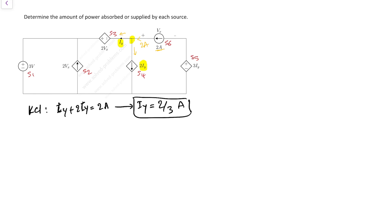That was kind of easy to find. Now we need to find Vx. Vx is the voltage across this current source. As we discussed before, the voltage across a current source is not necessarily zero — it can be any number including zero. We should find a loop where all voltages are known except Vx, then write KVL to determine it.